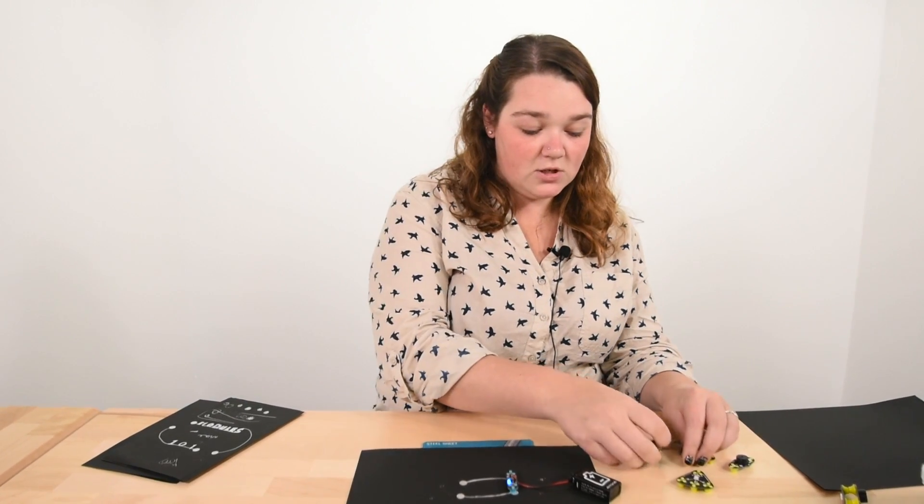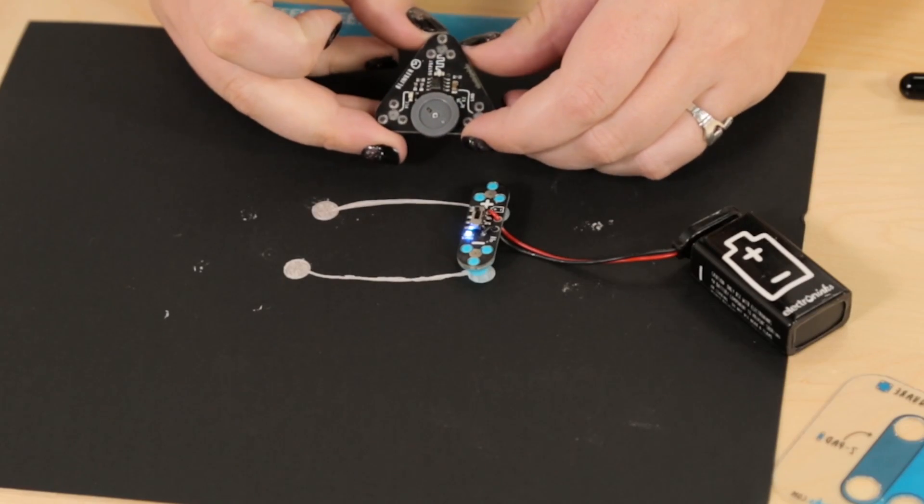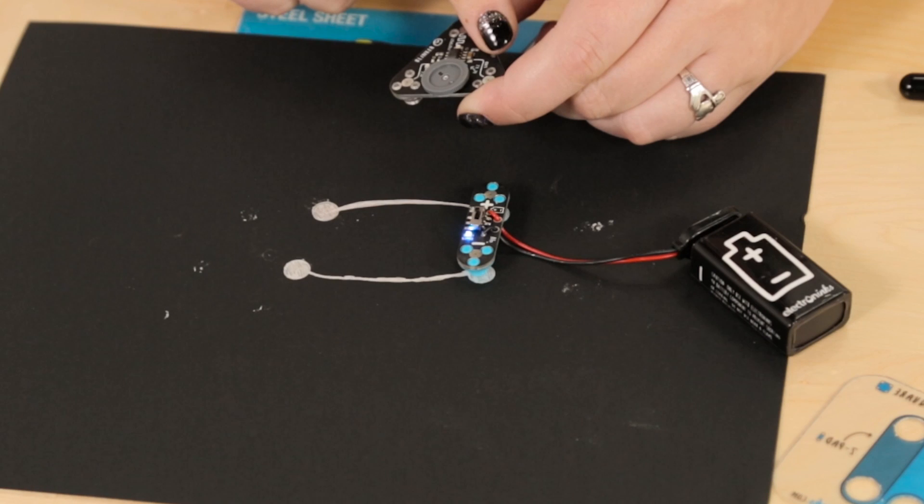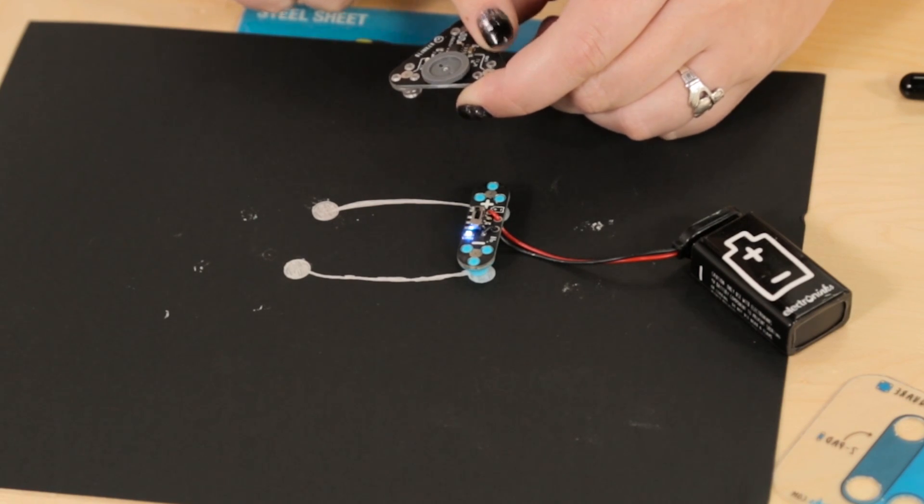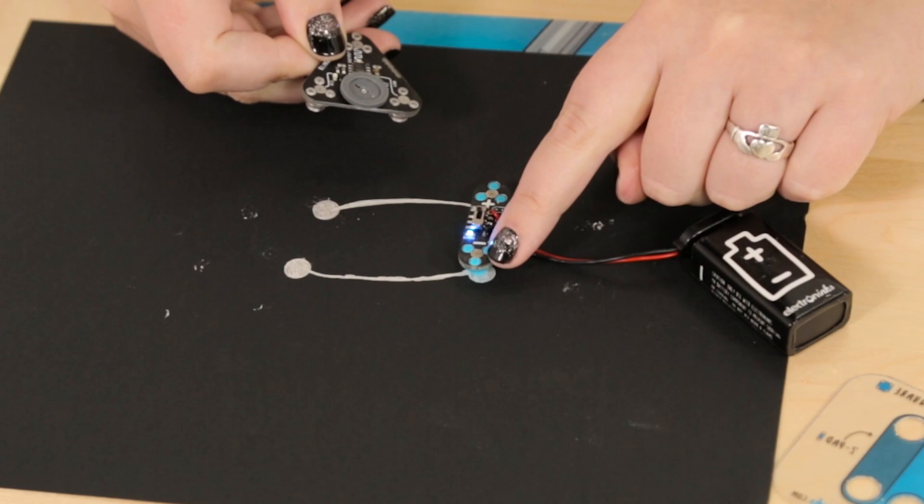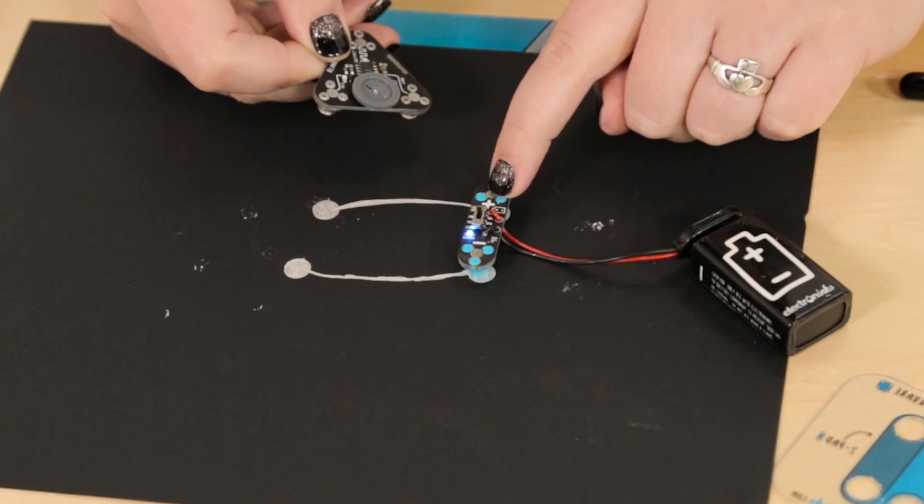Last module that I want to show you is the blinker. The blinker on here has a side that's marked VCC, a side that marked ground, and a side that's marked output. Ground refers to the negative and VCC refers to the positive.